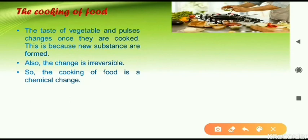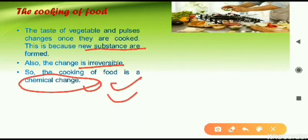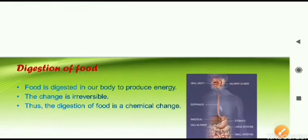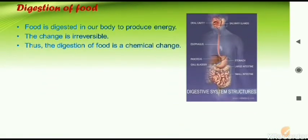The third example is cooking of food. Raw vegetables and raw pulses we cannot eat, but once they are cooked we can eat them — because new substances are formed, which is the first condition for chemical change. Second, after cooking the food, we cannot get back the raw vegetables again. The change is irreversible. Both conditions are fulfilled, so cooking of food is also an example of chemical change.